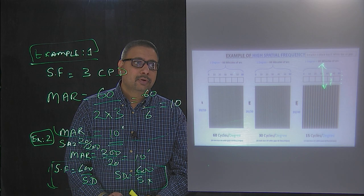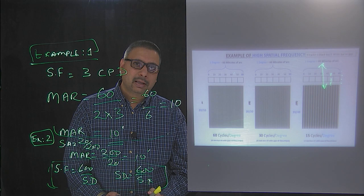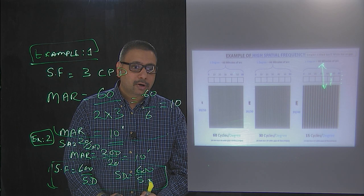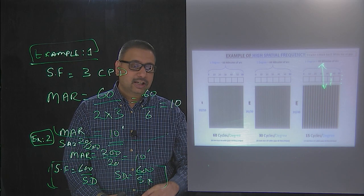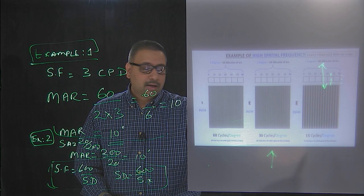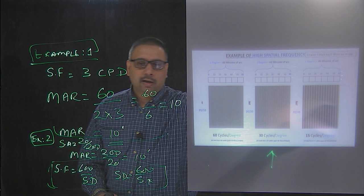High spatial frequency means you have a large number of black and white stripes that fit into one degree. If it's 60 cycles per degree, that means you have 60 white bars and 60 black bars fit into one degree. If it's 30 cycles per degree, you have 30 black bars and 30 white bars. And if it is 15 cycles per degree, you have 15 black bars and 15 white bars within a degree.